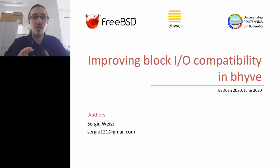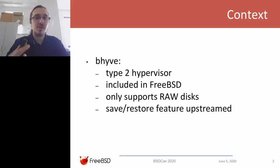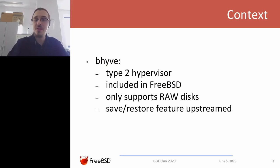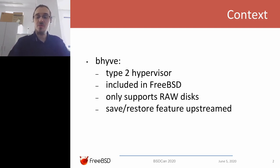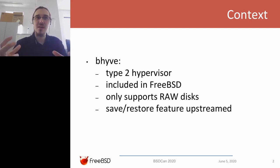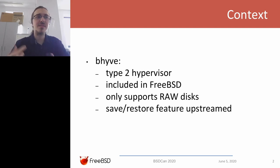For a bit of context, this work concerns Bhyve, which is a type 2 hypervisor that is included in the FreeBSD operating system. At the moment you can only run virtual machines with Bhyve from raw disks. This means that your virtual machine will only be able to run from disks that actually look like physical disks, and this has many drawbacks as I will show you.